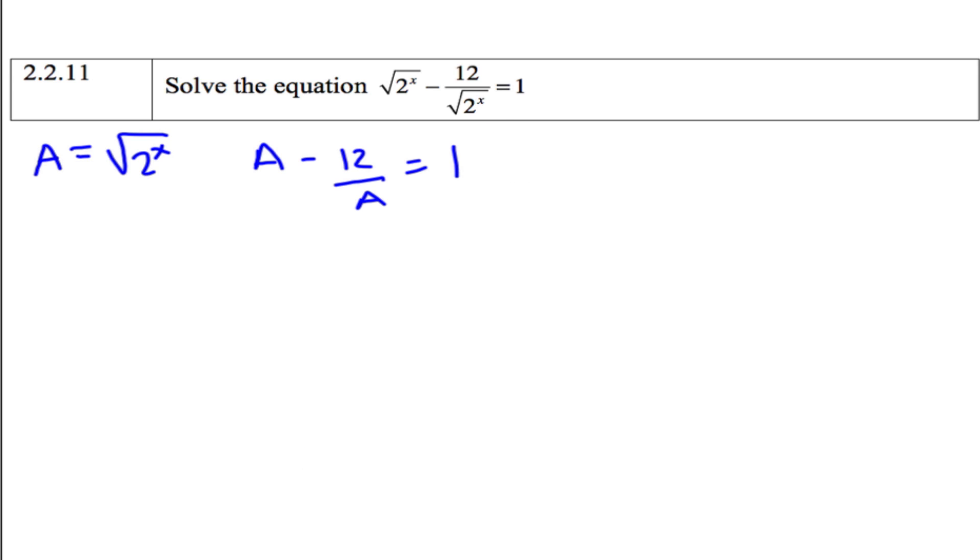And then I'm going to multiply both sides by A. So then we have A squared minus 12 equals A, which is A squared minus A minus 12 equals 0.